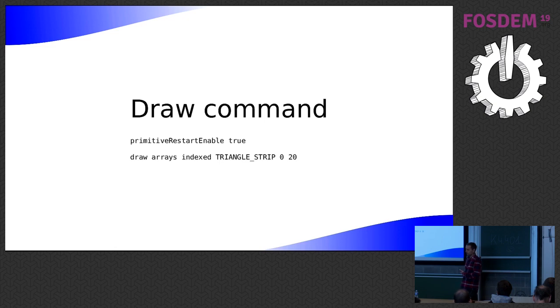So this is an example of what I was talking about with the automatically generated commands. So primitive restart enable, that's the name of a member on the pipeline create info struct, so setting that command just sets that member on the pipeline create info struct to true. And then whenever you execute a command, VK runner works out what pipelines are needed and creates all of the pipelines that are needed and then picks the right one to execute with that state that you described.